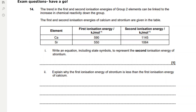Exam question: the trend in first and second ionisation energies of group 2 elements can be linked to the increase in chemical reactivity down the group. The first and second ionisation energies of calcium and strontium are given in the table — both have a similar first ionisation energy, and the second ionisation energy of calcium is slightly larger than that of strontium. Write an equation including state symbols to represent the second ionisation energy of strontium. We go from gaseous strontium 1+ to gaseous strontium 2+, losing one electron.